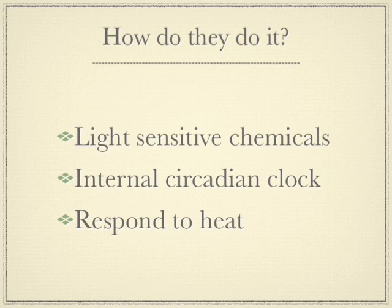So how do they do it? How do they respond to the length of the day and night? Inside every plant are lots of chemicals, but there are also some that are light sensitive — affected by the quantity and quality of light that they receive, mainly in the leaves. Plants also have an internal clock, or circadian clock, which helps time things, and some plants also respond to heat. So there are a number of ways that plants actually respond to the environment.